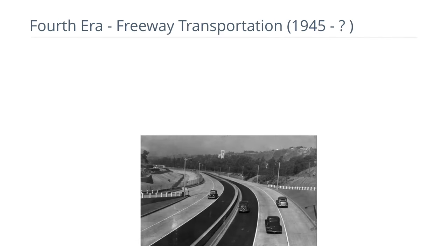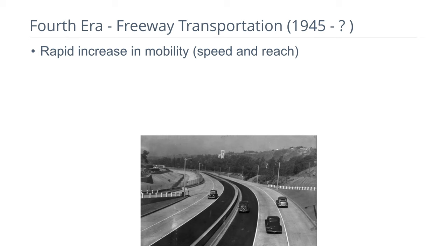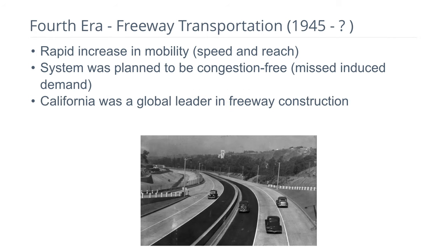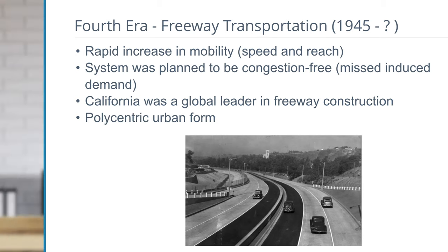The fourth era is the freeway transportation era. This is an image of the Arroyo Seco Parkway in Los Angeles — showing free flow conditions that rarely exist in peak hours today. This provided a rapid increase in mobility, speed, and reach. Engineers designed it thinking they were planning a congestion-free system, but they didn't know about induced travel — by providing capacity, travel demand grew as people traveled more or longer distances. California was a global leader in freeway construction techniques. This era also transformed urban form from the monocentric city with jobs at the center to the polycentric city with many dispersed employment centers.